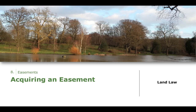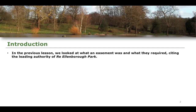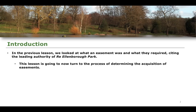This lesson is going to spend some time talking about the acquisition of an easement. We're not going to examine all of the modes and methods of acquisition in this lesson, as we will get to some of the other ones in future lessons. Fundamentally, we're going to spend a little bit of time talking about easement acquisition and then focus on the first type, which is known as express acquisition. The previous lesson looked at what an easement was and what is required for its creation, citing the leading authority — the case of Re Ellenborough Park. This lesson now turns to the process of determining the acquisition of easements within the law.